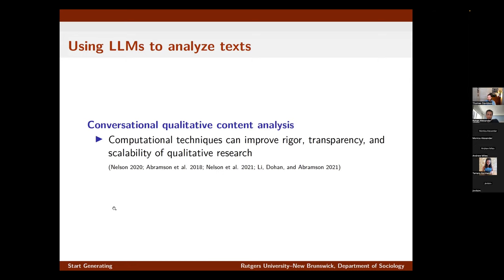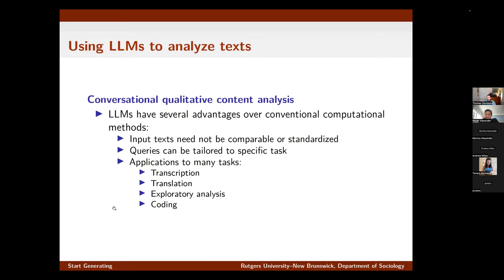Where these applications get even more interesting is when we start thinking about how we can apply large language models to more qualitative types of text analysis. Several papers have argued that computational techniques can help address problems in qualitative research, including issues of rigor, transparency, and scalability. I argue that large language models have several advantages over more conventional computational methods — here I'm talking particularly about topic modeling, which is the most widely applied approach that many people have advocated for use in qualitative research.